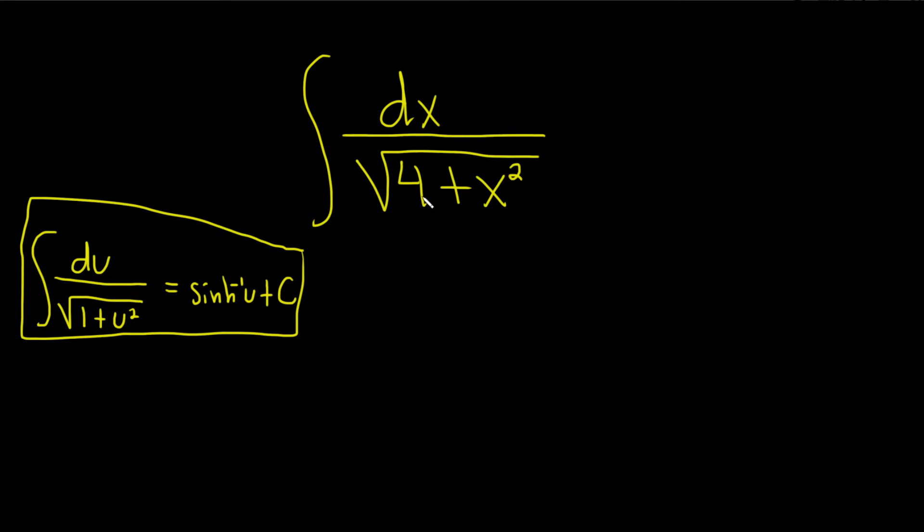So what we're going to do is we're going to manipulate this. I'm going to do it up here on the top left. So if we have the square root of 4 plus x squared, we want it to be a 1. So what we can do is we can pull out a 4 like this, 4, parentheses, 1 plus x squared over 4.